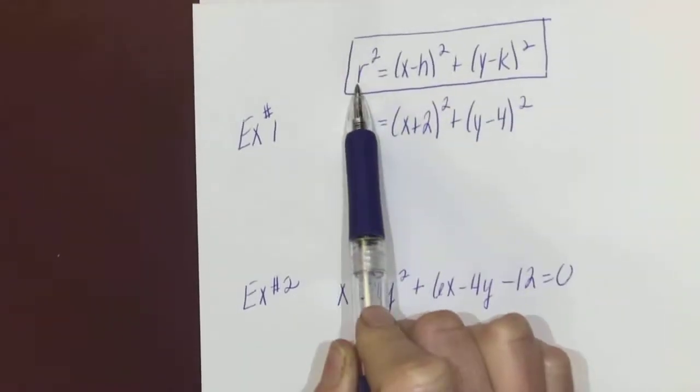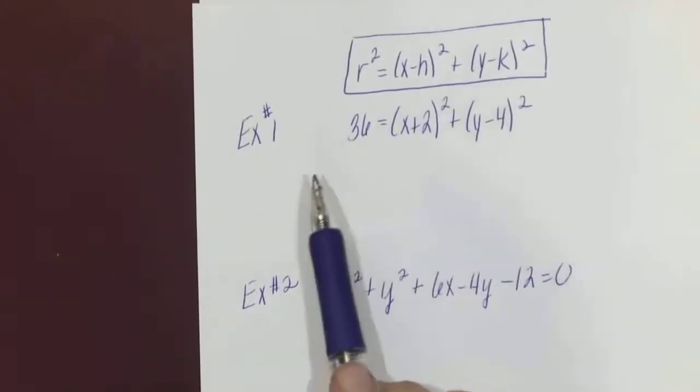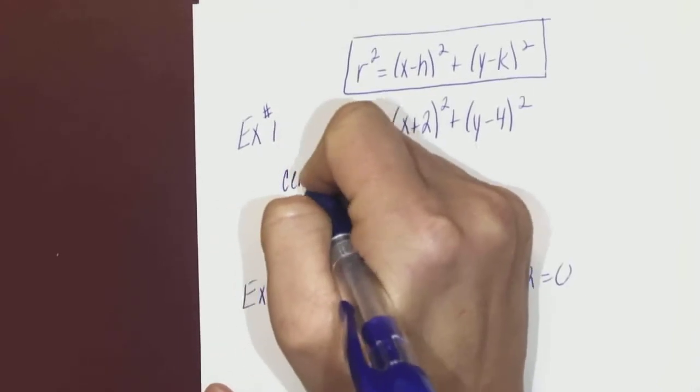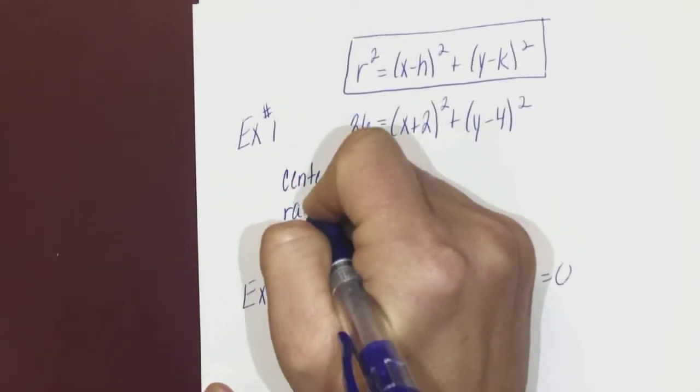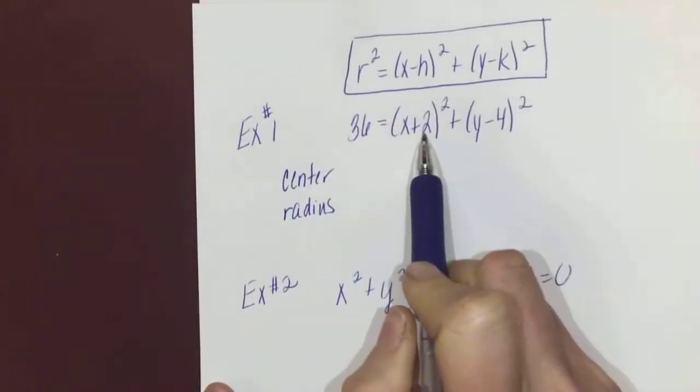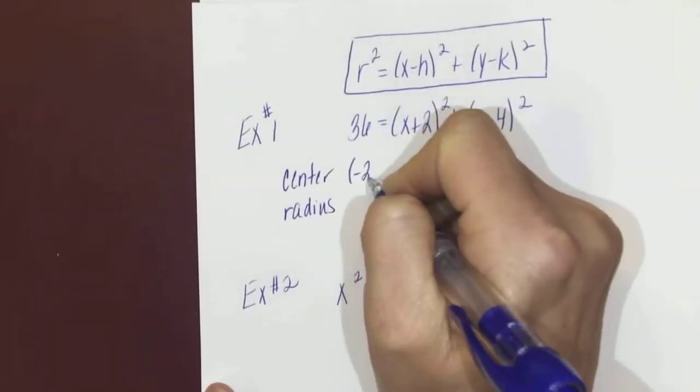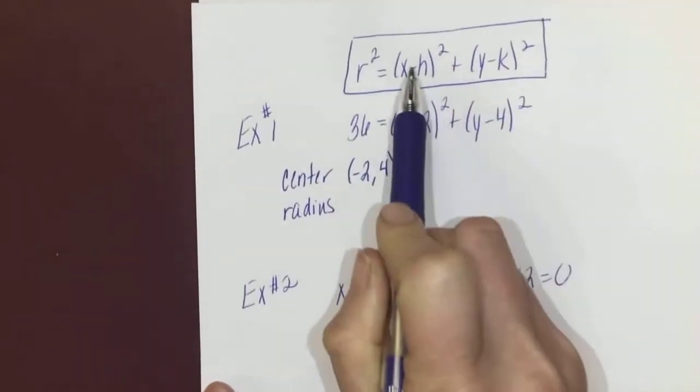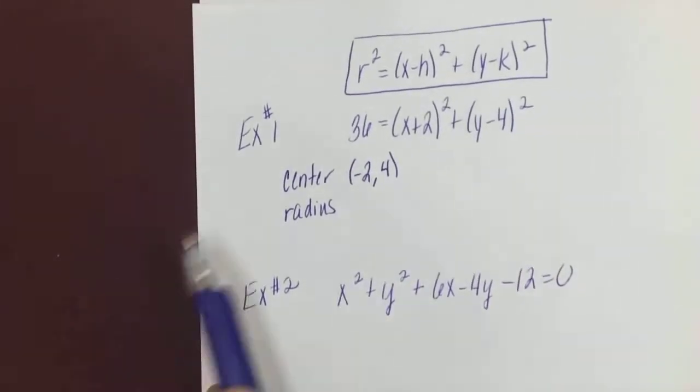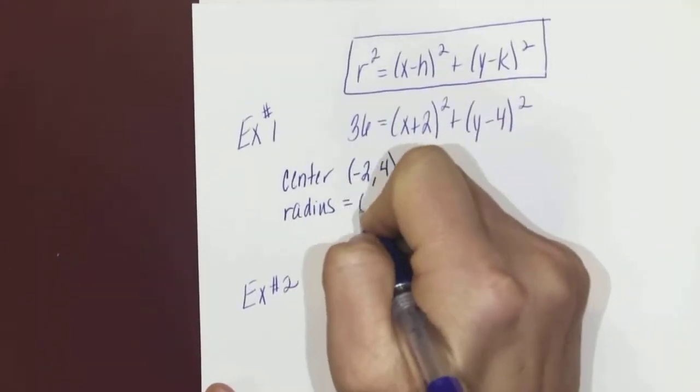The radius is right here. This example number one is already in the correct form. I think it's good to list what you know—the center and the radius—first, and then graph it. My center would be (-2, 4). We take the opposite of what's inside because we have a minus sign in our equation here. The radius is the square root of 36, which is 6.